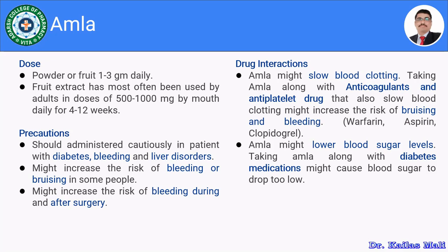Moving towards the drug interactions of Amla, there are two major drug interactions. The first is related to anticoagulants and antiplatelet drugs. Warfarin acts as an anticoagulant and aspirin acts as an antiplatelet; both thin the blood. Amla also has the ability to thin the blood, so combining Amla with anticoagulants or antiplatelet drugs like warfarin or aspirin may cause bruising and bleeding, and the blood becomes thinner. One should not combine Amla with anticoagulants and antiplatelet drugs such as warfarin, aspirin, and clopidogrel.